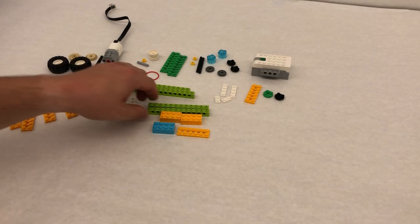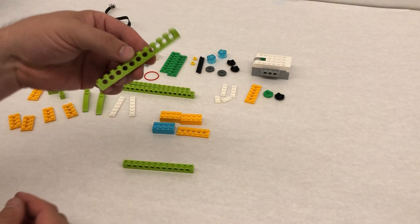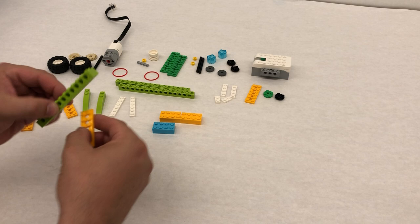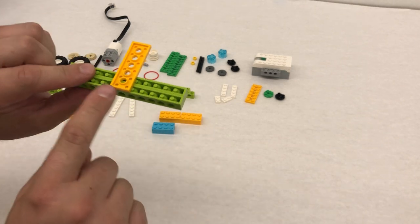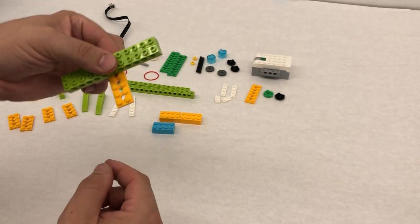So what I'm gonna do is I'm gonna start off with two of these. These are 2, 4, 6, 8, 10, 12 length. We're gonna put two of them together like this and then we're gonna go right in the middle. This one has one, two, three, four, five holes. We're just gonna go right in the middle.